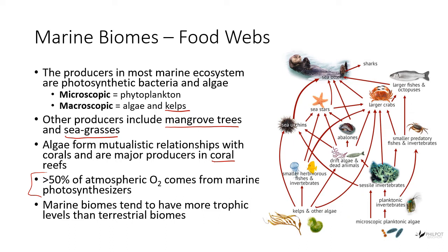Marine biomes tend to have more trophic levels than terrestrial biomes — often five, six, seven, or eight trophic levels — because you start with such small organisms. Microscopic phytoplankton are eaten by zooplankton, which are eaten by small fish, then slightly larger fish, then middle-sized fish, then large fish, which could be eaten by a penguin, which can be eaten by a sea lion, which can then be eaten by an orca. So you can have many trophic levels, much more than you typically see on land.